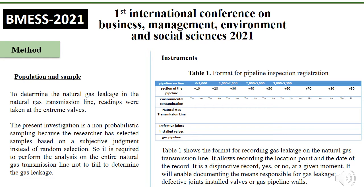Therefore, 12 articles in the study population. Instruments: Table 1 shows the format for recording gas leakage of the natural gas transmission lines. It allows recording the localization point and the date of record, with distinctive records of yes or no at a given moment. It enables documenting the mains responsible for gas leakage — defective joints, solid valves, or gas pipeline walls.